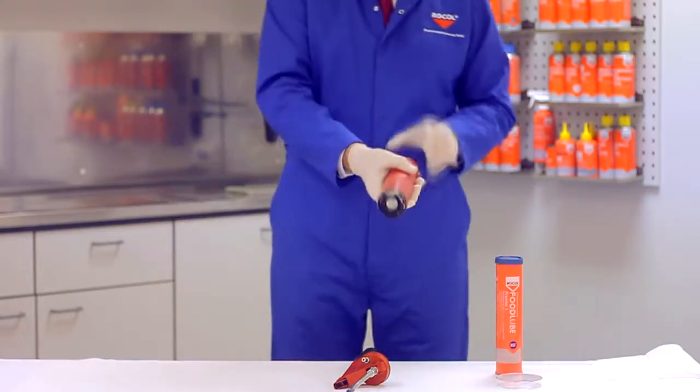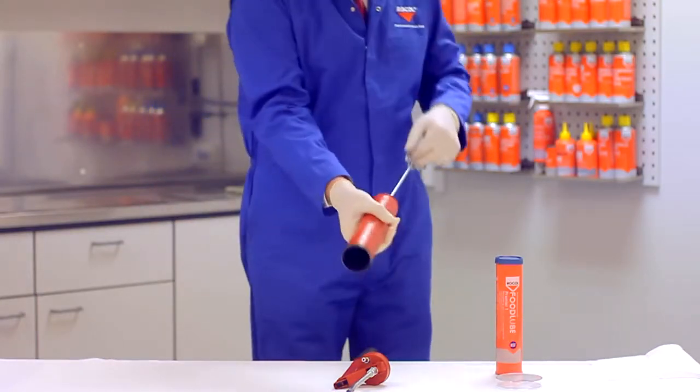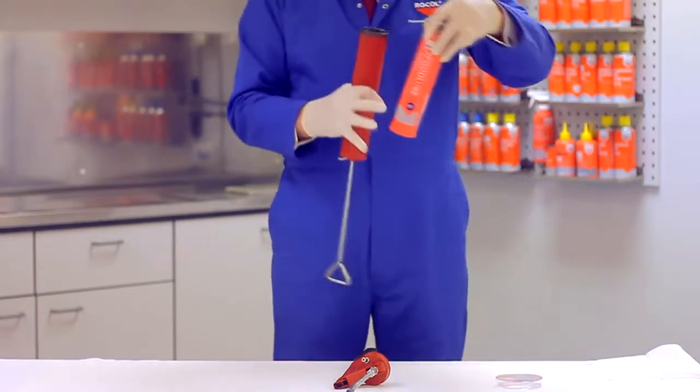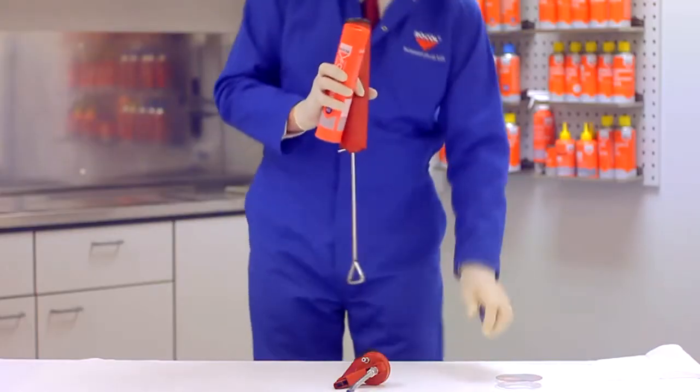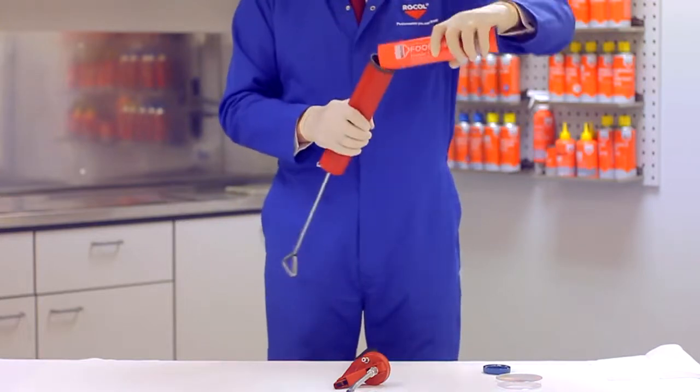Pull the plunger rod back fully again and take your Rokol cartridge. Remove the dust cap at the top of the cartridge and place the cartridge into the gun.